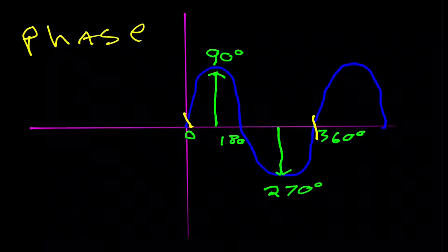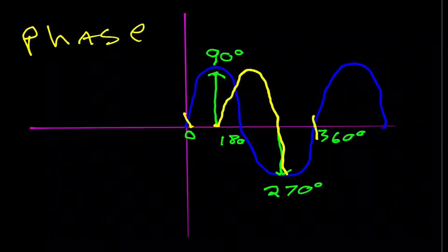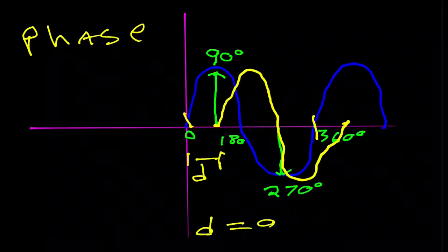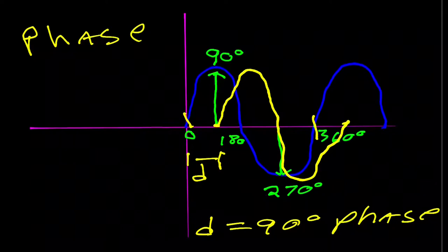If another wave starts at the 90-degree point and completes one wavelength, it is 90 degrees out of phase with the original wave. This distance represents a 90-degree shift in phase angle — so the yellow wave is 90 degrees out of phase with the blue wave.